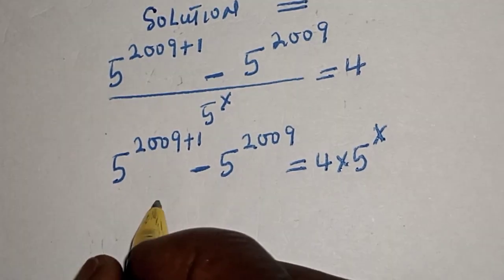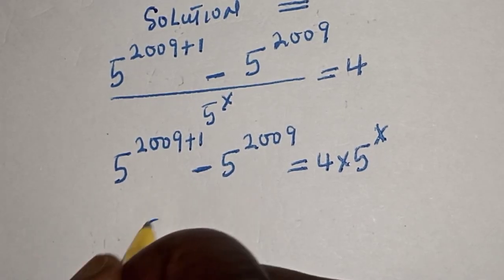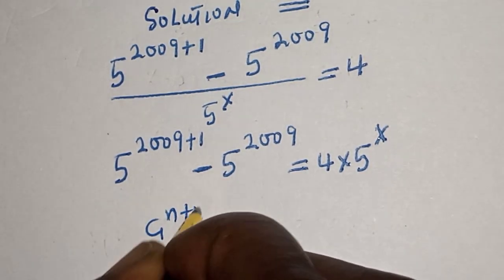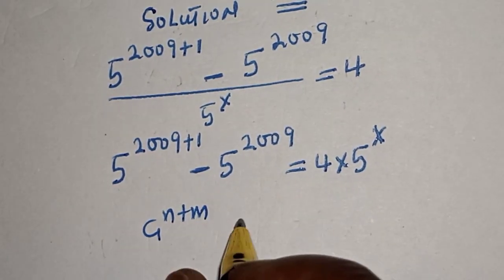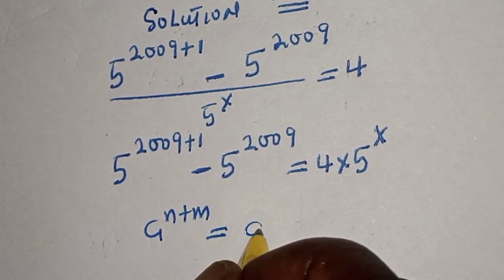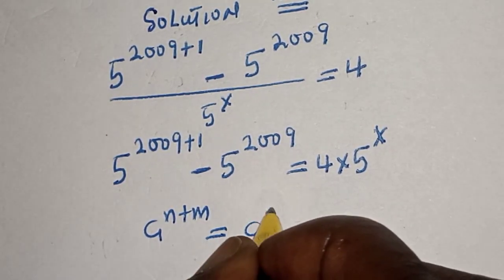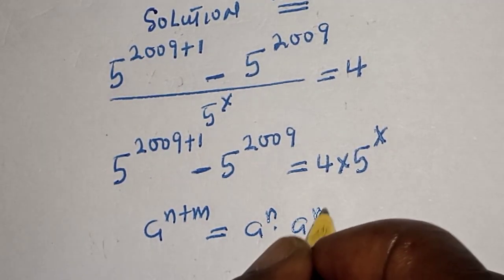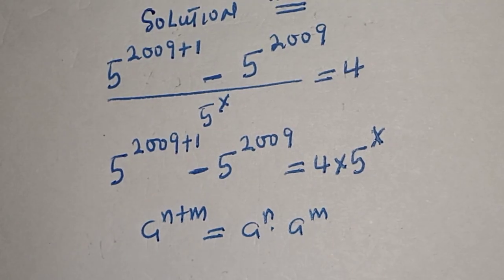Now remember from this rule that a raised to power n plus m is equal to a raised to power n multiplied by a raised to power m.